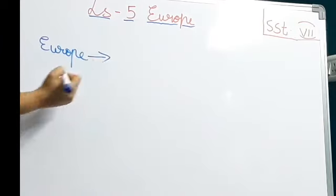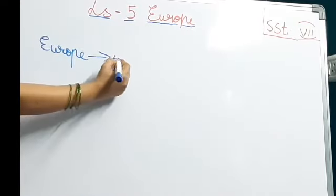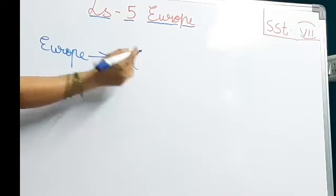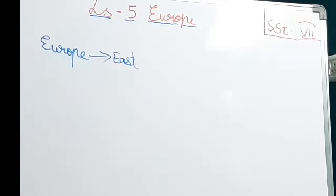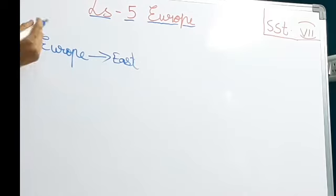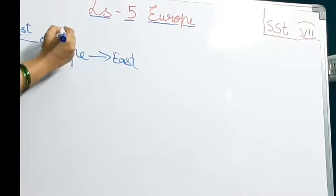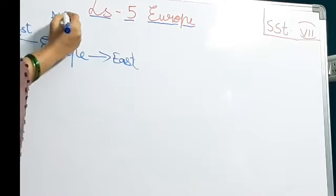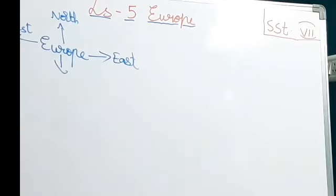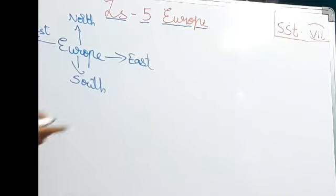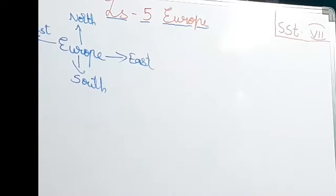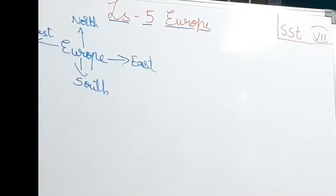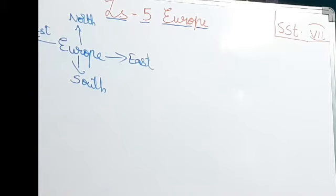Now we are writing the directions of Europe. This is east - the right hand side will be east. And to the left of Europe we have west, it is the west direction. And to the top it is north, and to the bottom it is south. If you see the map also, right hand side will be east, left will be west, top is north and bottom is south.